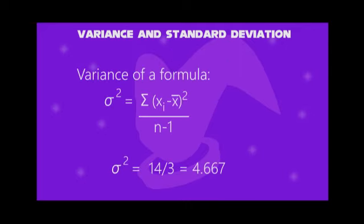To get the variance, we write either S squared or Greek letter sigma squared, equal to sum of Xi minus X-bar squared, divided by n minus 1. We get 14 divided by 3.